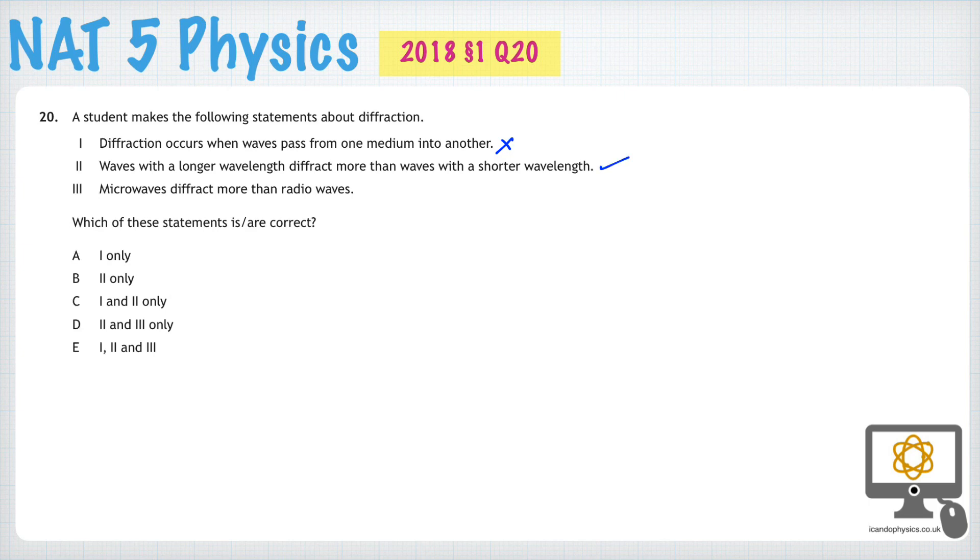And then finally, microwaves diffract more than radio waves. Well, we've just been talking about that. Microwaves have a short wavelength compared to radio waves, which have a long wavelength, long lambda. And so therefore, if part two is correct, of course, which it is, then part three is incorrect because radio waves will diffract actually more than microwaves will. So that's incorrect.